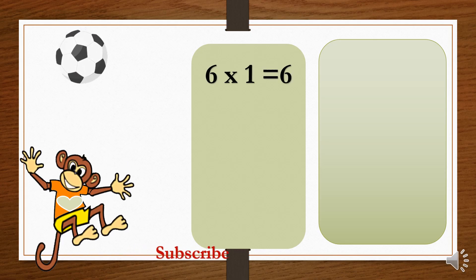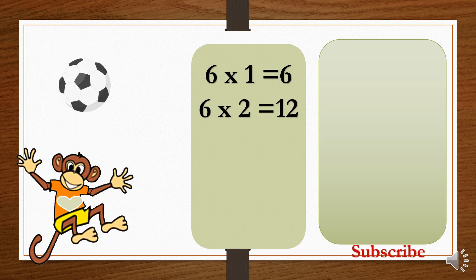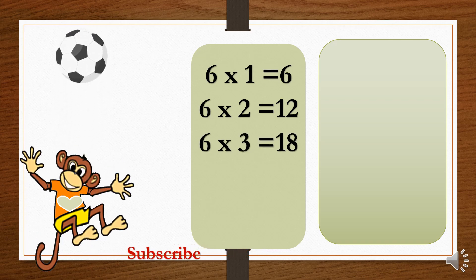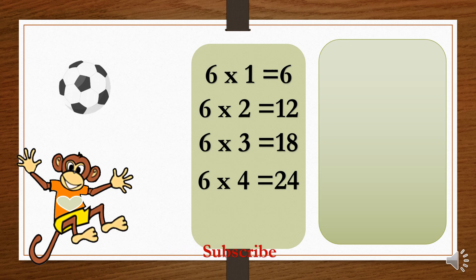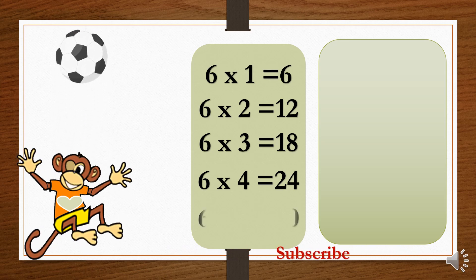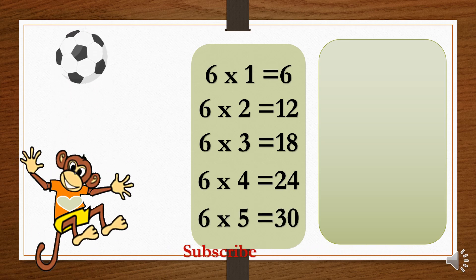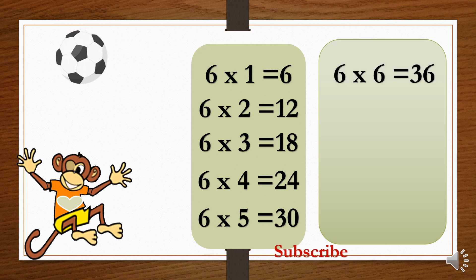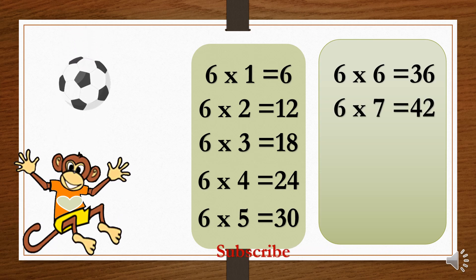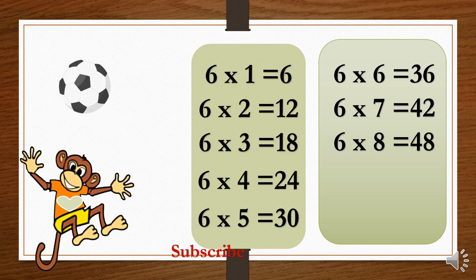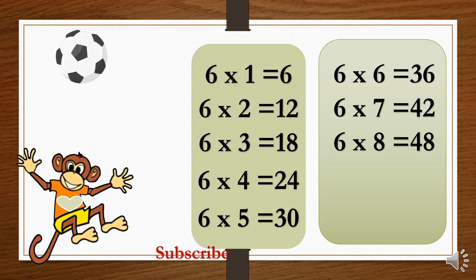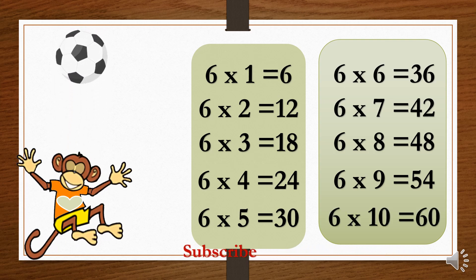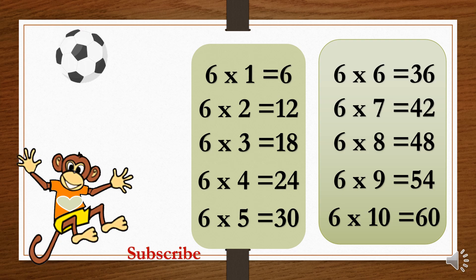6×1=6. 6×2=12. 6×3=18. 6×4=24. 6×5=30. 6×6=36. 6×7=42. 6×8=48. 6×9=54. 6×10=60.